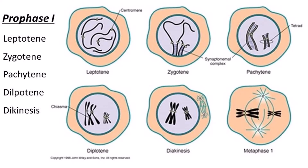Fifth stage is diakinesis. The last phase of prophase first is for termination of chiasmata. The spindle fibers originate and the crossover homologous chromosomes are now separated. The nucleolus disappears and the nuclear membrane — that is the nuclear envelope — also breaks down.